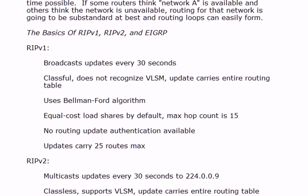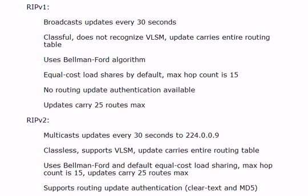Some basics: RIP version 1 broadcasts updates every 30 seconds, is classful, doesn't recognize VLSM, and updates carry the entire routing table. Both versions use Bellman-Ford. Version 2 multicasts its updates. Both perform equal cost load sharing by default and the max hop count is 15 — 16 is considered unreachable. There is no routing update authentication for version 1. Version 2 enables authentication in clear text or MD5, and if you're going to the trouble of configuring it, please use MD5.